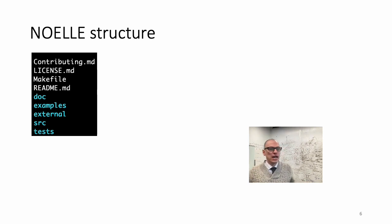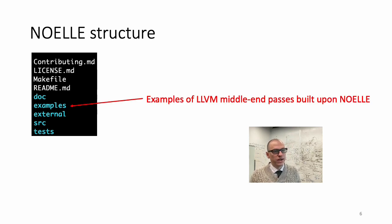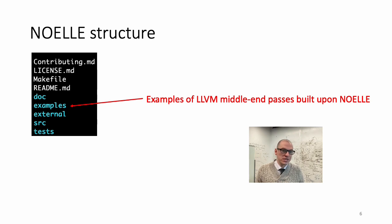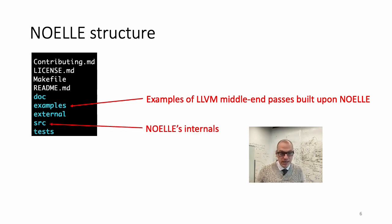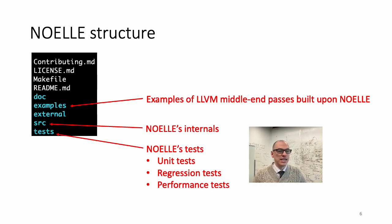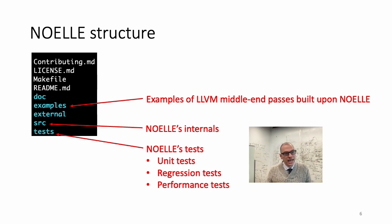Let's jump into the structure of NOEL. If you download it, you'll see this directory structure. Under examples, you have very simple LLVM passes that show how to use NOEL in a relatively simple way — showcases for how to use dependence-centric abstractions provided by NOEL. Under source, you have NOEL itself — everything under source is NOEL. Then we have a very rich set of tests that test specific tools we built upon NOEL, and by testing these tools that optimize the code, we are testing the abstractions that NOEL provides. We also have unit tests that test specifically the single abstractions NOEL provides.